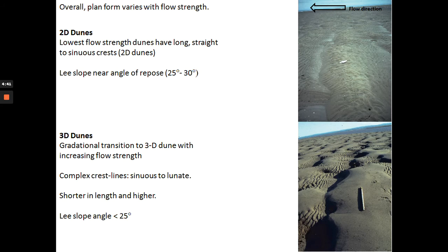In nature, you can identify two different types of dunes. First are 2D dunes — two-dimensional dunes — which tend to have a long, straight to sinuous crest. We know the flow is moving from right to left, so you have the stoss on one side and the lee on the other, with a trough in front. Two-dimensional dunes tend to have straight, long crests, and the lee slope is near the angle of ripples, between 25 to 30 degrees.